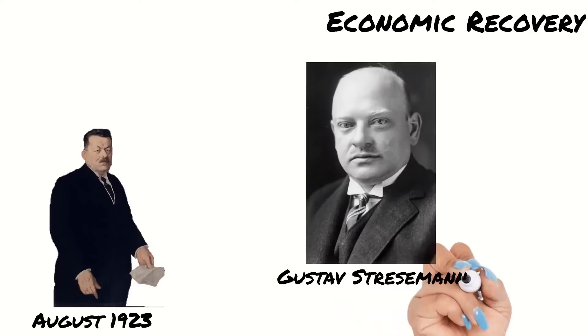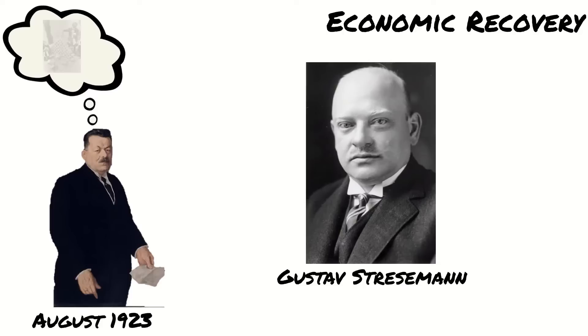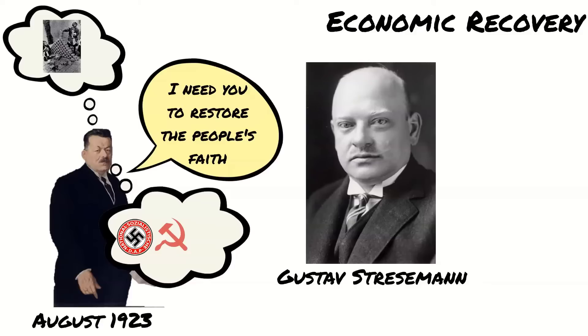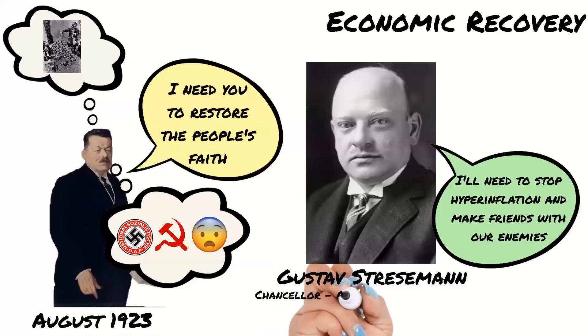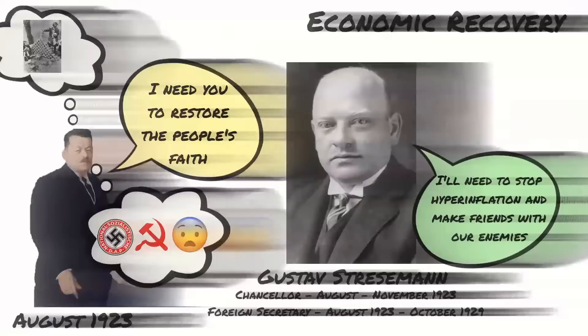In August 1923, President Ebert appointed Stresemann as Chancellor of the Republic and Foreign Secretary to try to end the hyperinflation and restore faith in the Weimar Republic. Support for extremist parties such as the NSDAP and the Communist Party were increasing as a result of the invasion of the Ruhr and hyperinflation. Stresemann hoped to stabilize the economy and improve foreign relations. He stepped down as Chancellor in November 1923 but continued as Foreign Secretary until 1929. Today we're going to look at how he stabilized the economy.